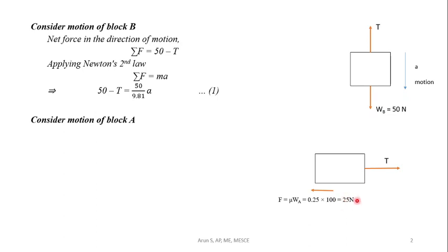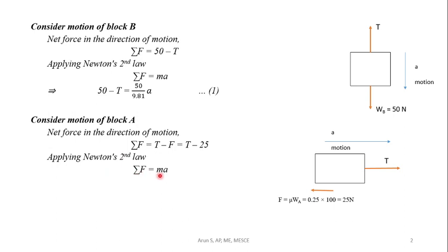The net force in the direction of motion is T minus F, that is T minus 25. Applying Newton's second law, sigma F equals T minus 25 equals mass 100 by 9.81 into A. This will be our equation number 2.